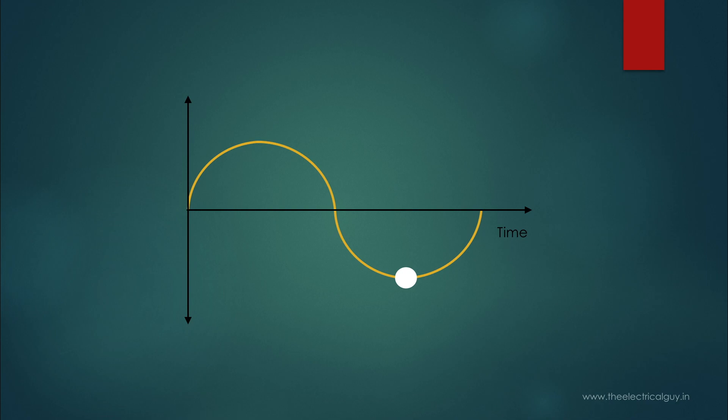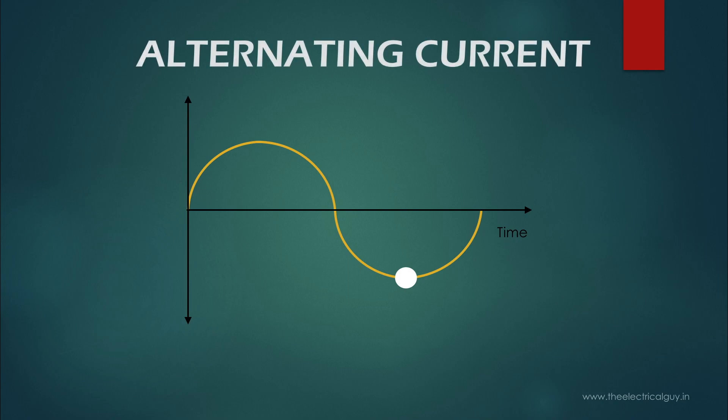And hence, such type of voltage and current which is changing their magnitude and direction continuously with time is called as alternating current.